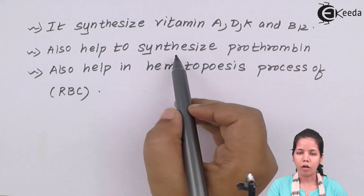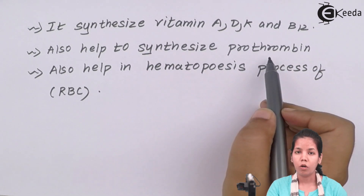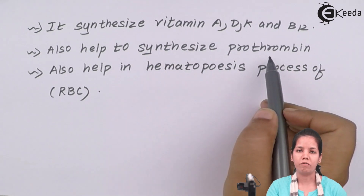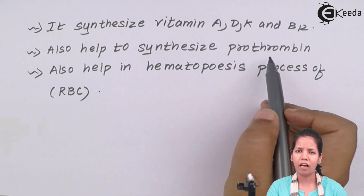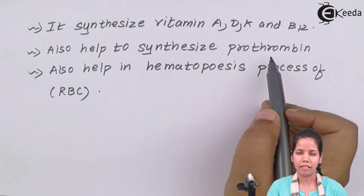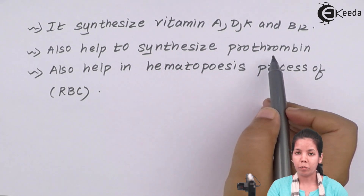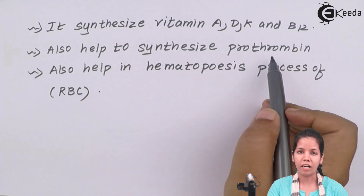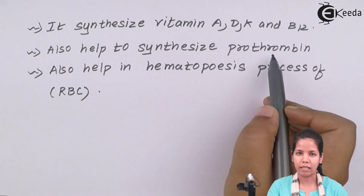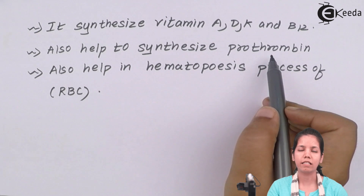The liver also helps to synthesize prothrombin, one of the clotting factors, along with fibrinogen in a cascade mechanism. Prothrombin is important when you have a cut in your body — to form a clot, prothrombin is needed — and the liver helps to re-synthesize this prothrombin.